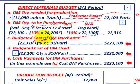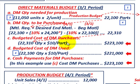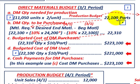For step three, the budgeted cost of direct material purchases: take the quantity to be purchased — 22,310 parts — times the budgeted material cost of $10 per part, giving a total of $223,100. For step four, the budgeted cost of direct material used: take the quantity needed for production — 22,100 parts — times $10 per part, giving $221,000.